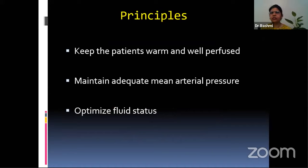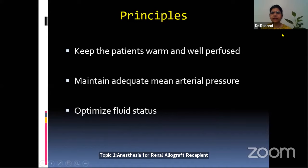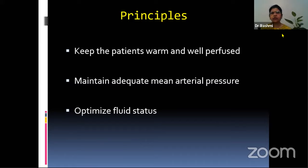As we all know, the normal glomerular filtration rate is 90 ml per minute per meter squared. When there is an insidious fall in GFR over a period of three months or more, it is reversible. With or without markers of kidney damage being present, we call it end-stage renal disease. The treatment for it is either dialysis or kidney transplant. Kidney transplant is the preferred treatment for end-stage renal disease because it prolongs life and the overall cost of treatment is less compared to dialysis.